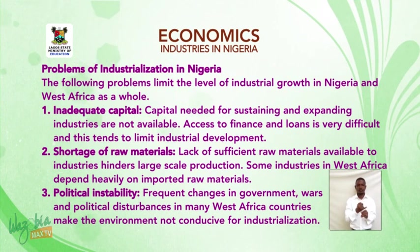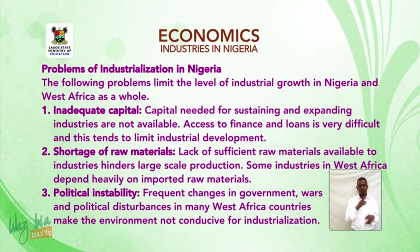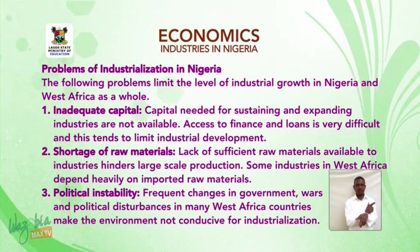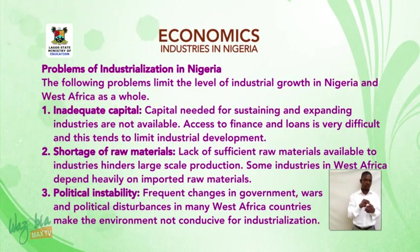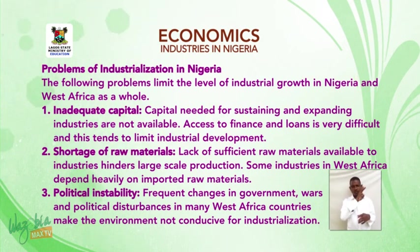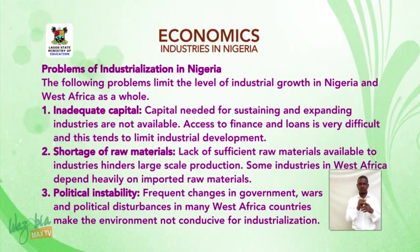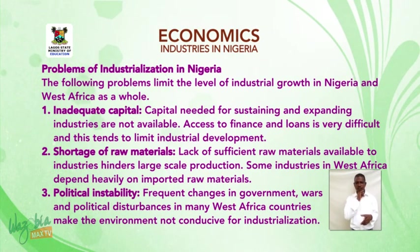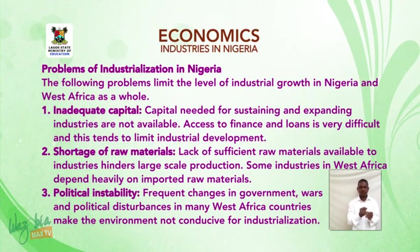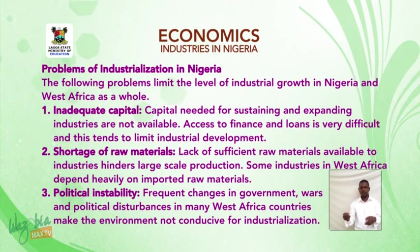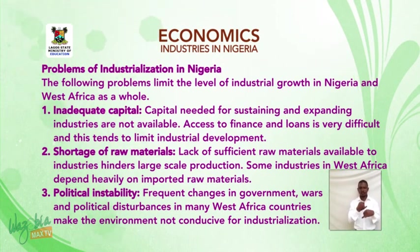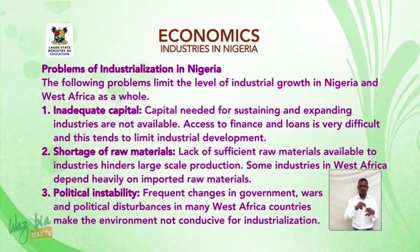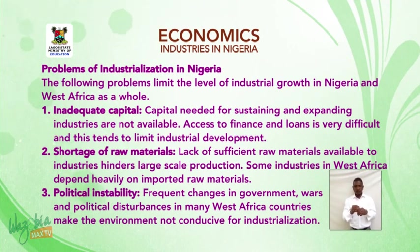Problems of industrialization in Nigeria. The following problems limit the level of industrial growth in Nigeria and West Africa as a whole. Number one: Inadequate capital. Capital needed for sustaining and expanding industries is not available. Access to finance and loans is very difficult, and this tends to limit industrial development. Number two: Shortage of raw materials. Lack of sufficient raw materials available to industries limits large-scale production. Some industries in West Africa depend heavily on imported raw materials. Number three: Political instability. Frequent changes in government, wars, and political disturbances in many West African countries make the environment not conducive for industrialization.